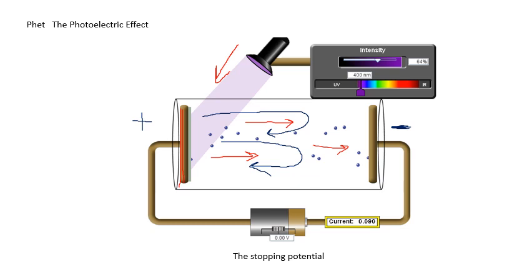And the voltage needed to stop the electrons from jumping across the gap is called the stopping potential. That's the stopping potential, Vs. So what you can do is increase the voltage across the gap until the current is zero. And that means that you're stopping the electrons from jumping across the gap. And the voltage is called the stopping potential.